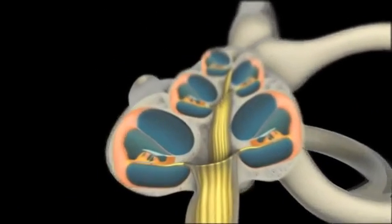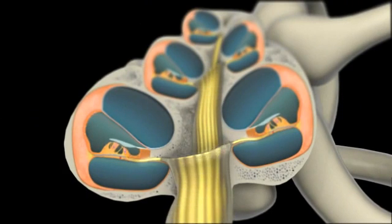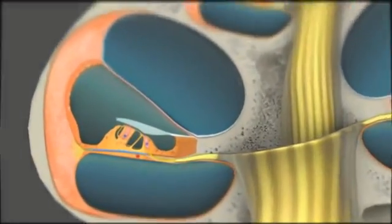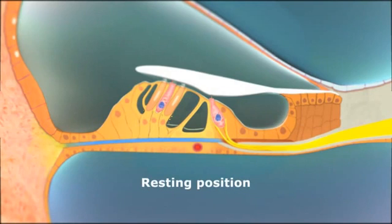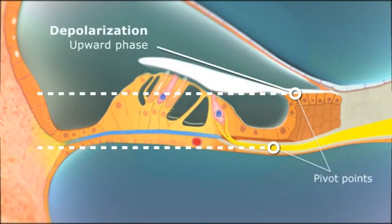The manner in which the basilar membrane vibrates in response to sound is the key to understanding cochlear function. The hair cells are located between the tectorial and basilar membranes and are stimulated by the shearing force between the two, caused by the pivot point of the two membranes.